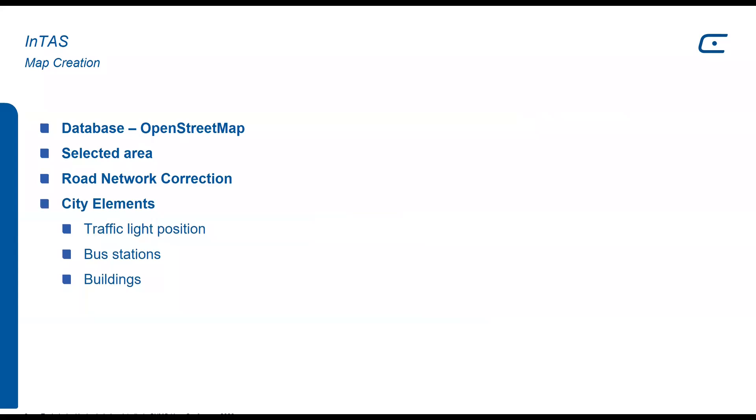We also considered in the map creation the city elements, which are traffic light positions. Together with the traffic management office from Ingolstadt, they gave us the actual status of all traffic lights, where they are placed, and we could update this information on OpenStreetMap. The same with the company that manages public transportation here in Ingolstadt. They provided us the actual position of the bus stations, and we considered them all inside of our scenario. The buildings, we just imported them from OpenStreetMap.